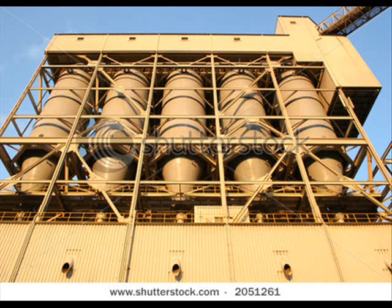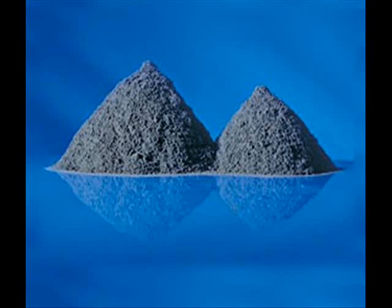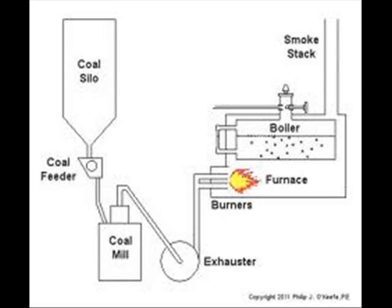Once it arrives at the power plant, the coal is then stored in silos until further use. When necessary, conveyors will transport the coal to large pulverizers where the coal is crushed into an extremely fine powder. Once crushed, the powder is mixed with hot air and blown to the furnace where it burns in suspension, meaning airborne. This coal-air mixture provides for the most complete combustion and the maximum possible heat output.